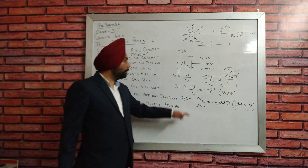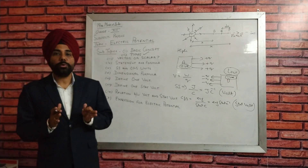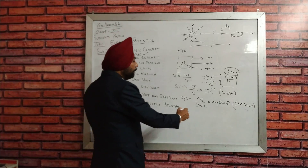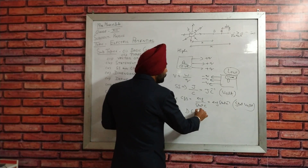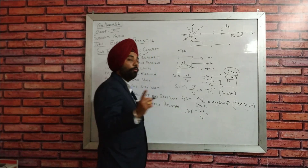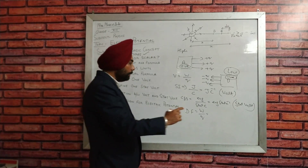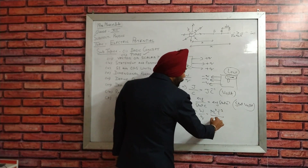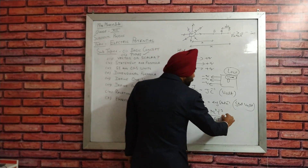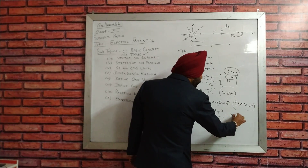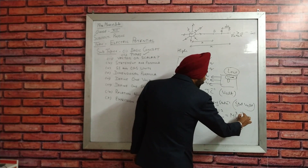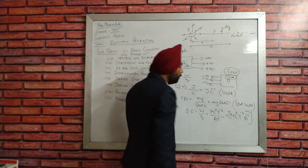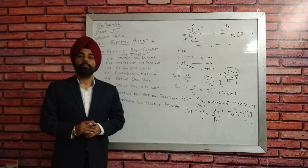You can also derive the basic dimensional formula of potential. Since potential is work upon charge, the dimensional formula for work is ML²T⁻², and for charge it is AT, so the basic dimensional formula for electric potential is going to be ML²T⁻³A⁻¹. That is the dimensional formula for electric potential.